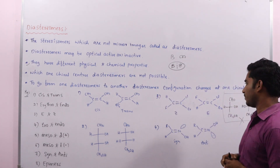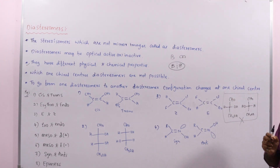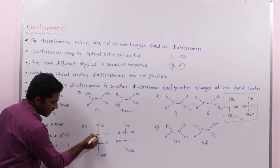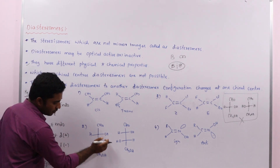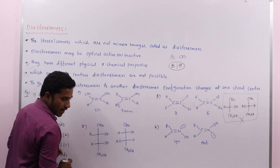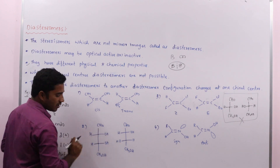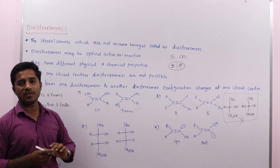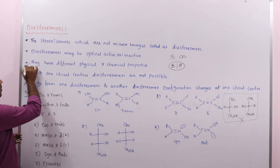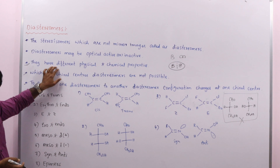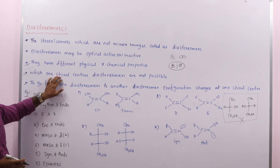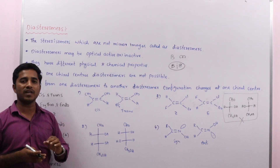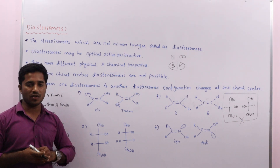To go from one diastereomer to another diastereomer, a configuration change at one chiral center is enough. In erythrose and threose, there are two chiral centers. In erythrose, both OH groups are on the right side. In the threo diastereomer, the configuration at one chiral center is changed — that is enough to get the diastereomer. So the key points are: diastereomers have different physical and chemical properties; with one chiral center diastereomers are not possible; and a configuration change at one chiral center is enough to go from one diastereomer to another.